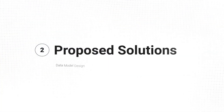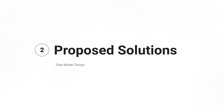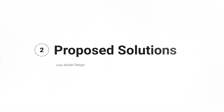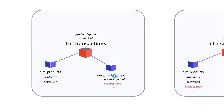My response was that you could do this in one of two ways, one of which I recommended more. Option one: you could create a dim product type table and establish a join to that. In that scenario your fact table would have two IDs — a product ID going to the dim products table and a product type ID going to a dim product type table. In theory that would work, and this could be a good approach if you have a lot more context around product type.